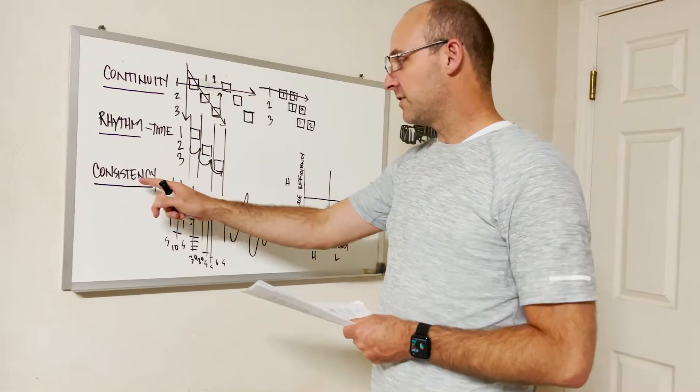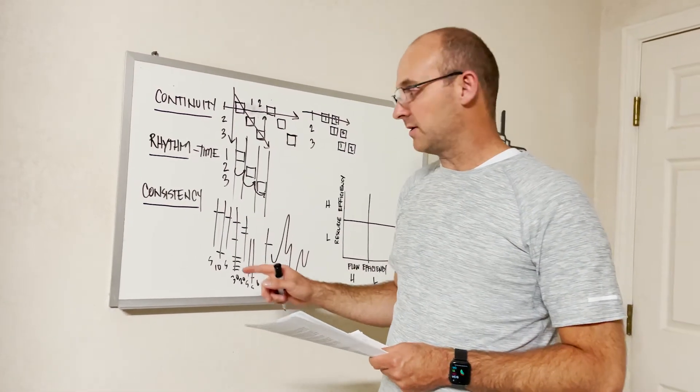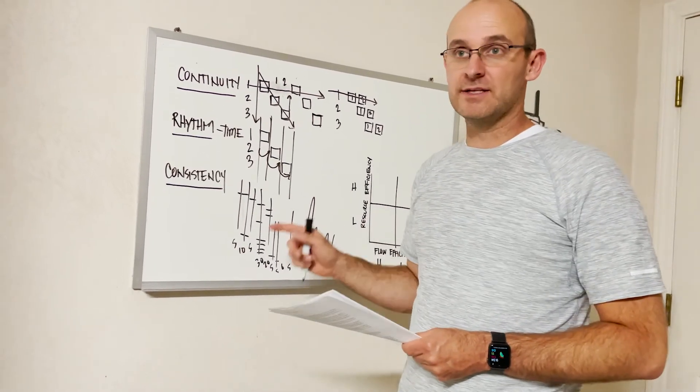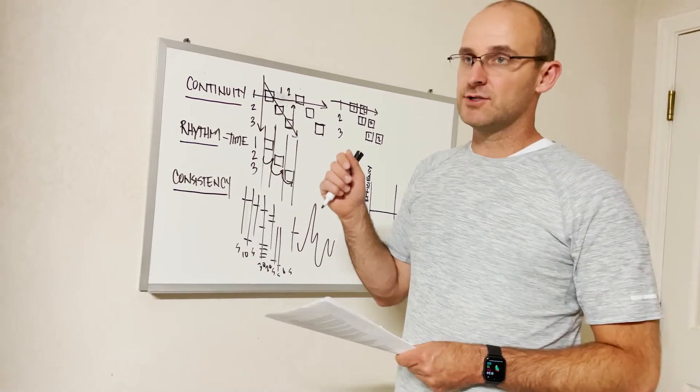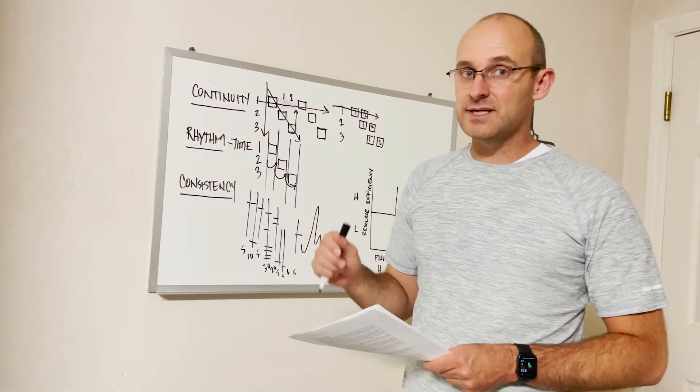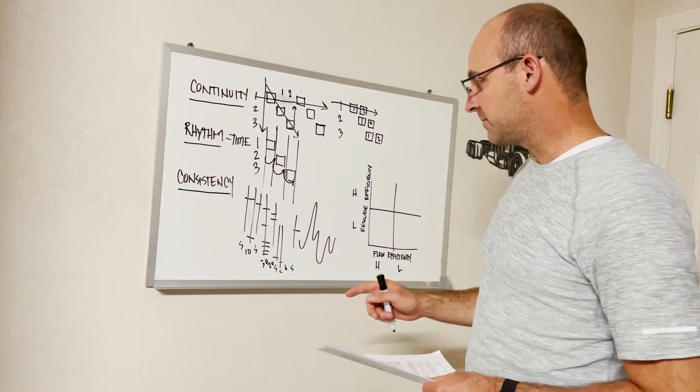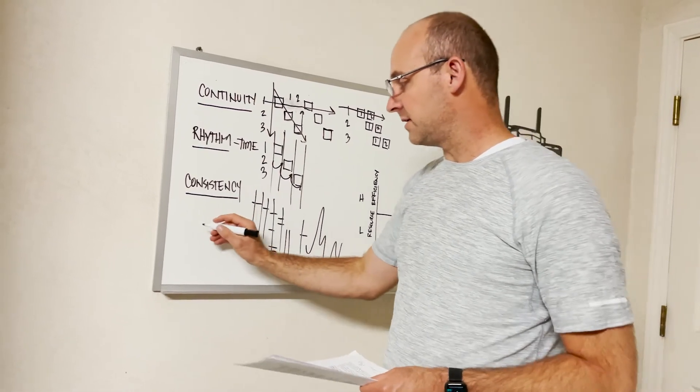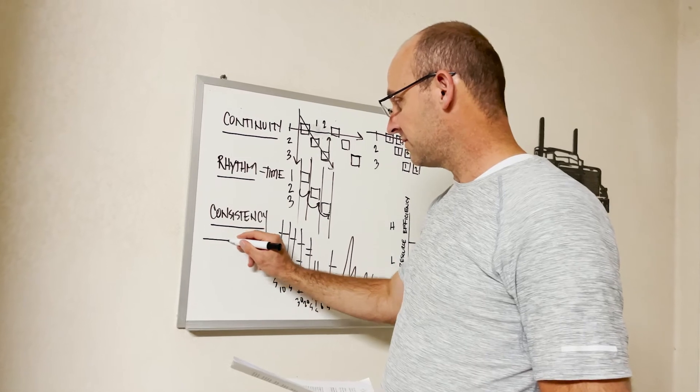And when you have a fluctuation in manpower or crew counts rather, in materials, then that expends money and it slows production because of context switching, because you're onboarding new people and the complexity of communication increases. So we have to have consistency. And when you do tact planning, let me just draw it down here.